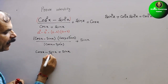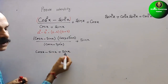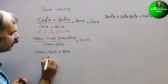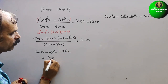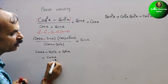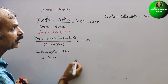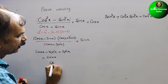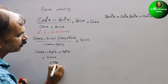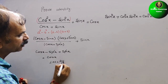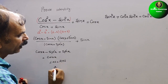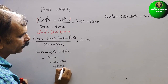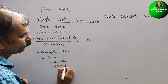The minus sin x and plus sin x cancel out, leaving cos x only. LHS equals RHS — hence proved.